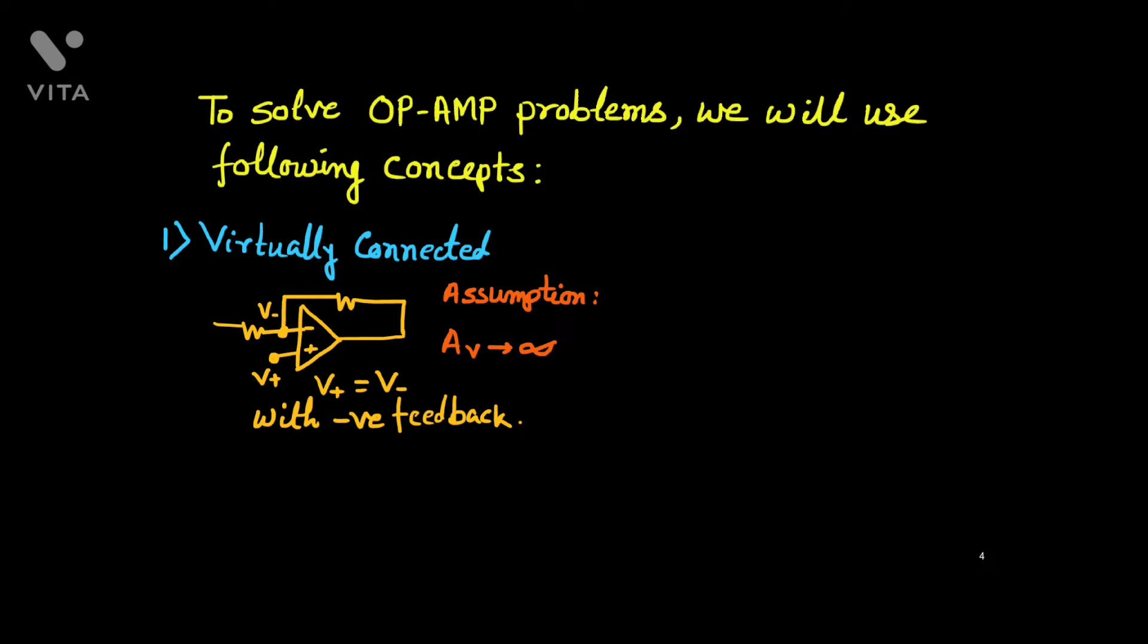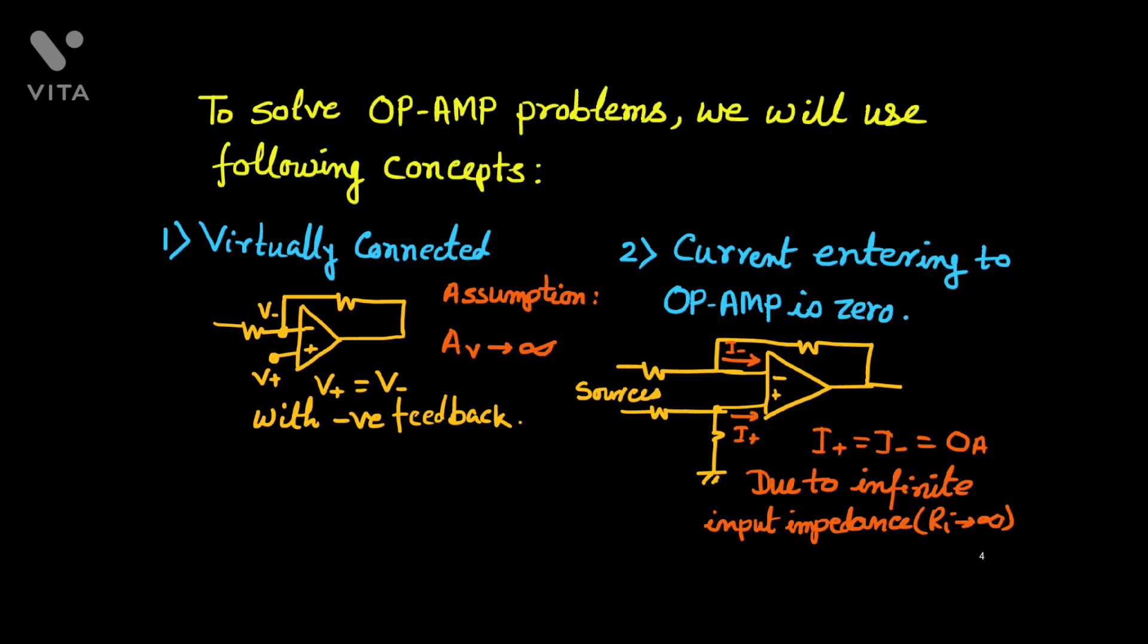And the second one is the current entering to op-amp is 0. This is also for ideal op-amp.